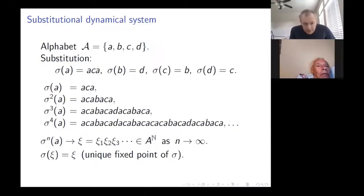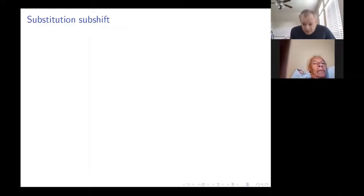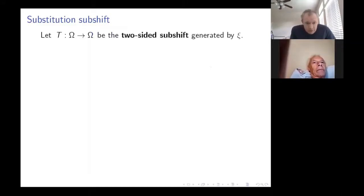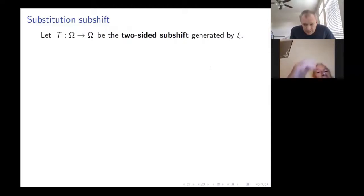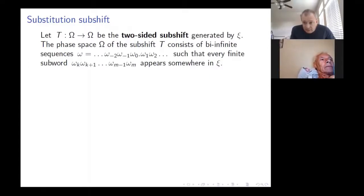This dynamics is simple, but now we produce something more complicated called the substitution subshift. That is the two-sided subshift generated by this infinite sequence. The construction applies to any infinite sequence, not just this particular one, but since this sequence comes from substitutional dynamics, it is called a substitution subshift.